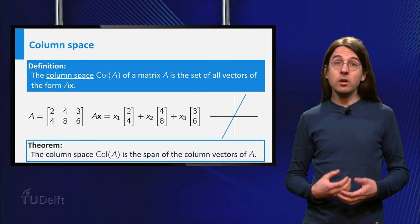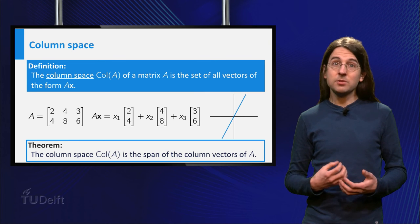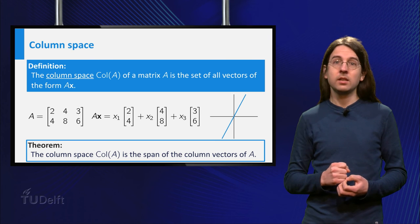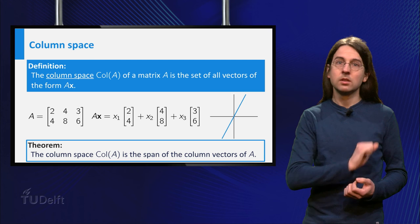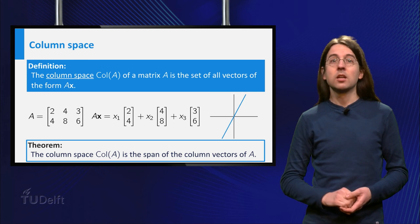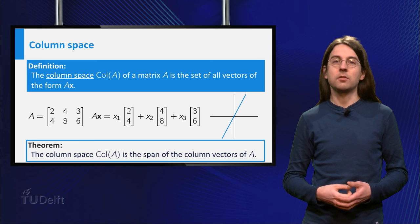Indeed you know that by definition of the matrix vector product that A times x is x1 times the first column of A plus x2 times the second column, etc. So different vectors x create all linear combinations of the columns as outcomes of A times x.